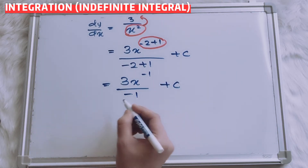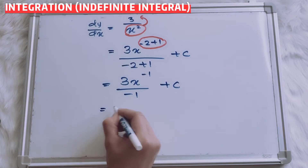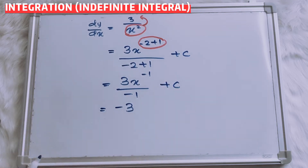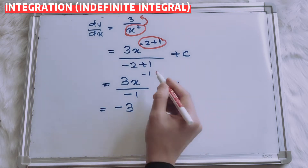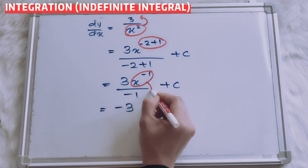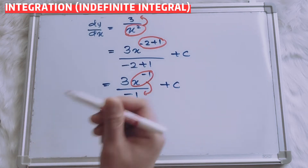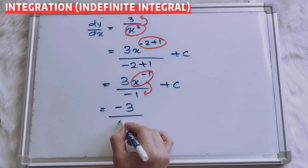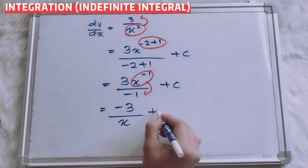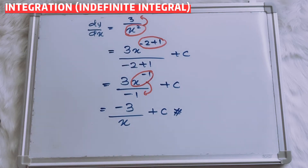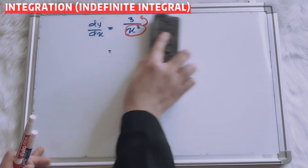3 divided by negative 1, you will have negative 3. After that, you have to bring back x to the bottom. So now you have negative 3 over x, plus C. Easy? Okay, next.